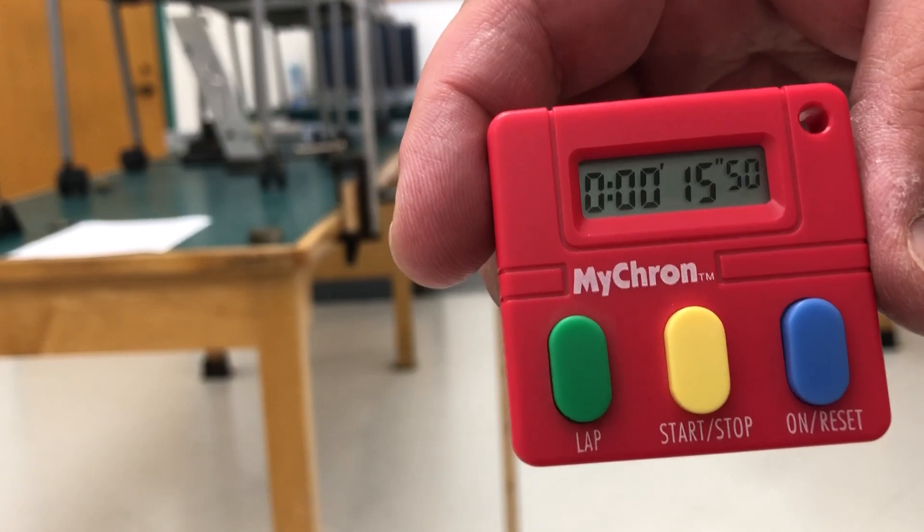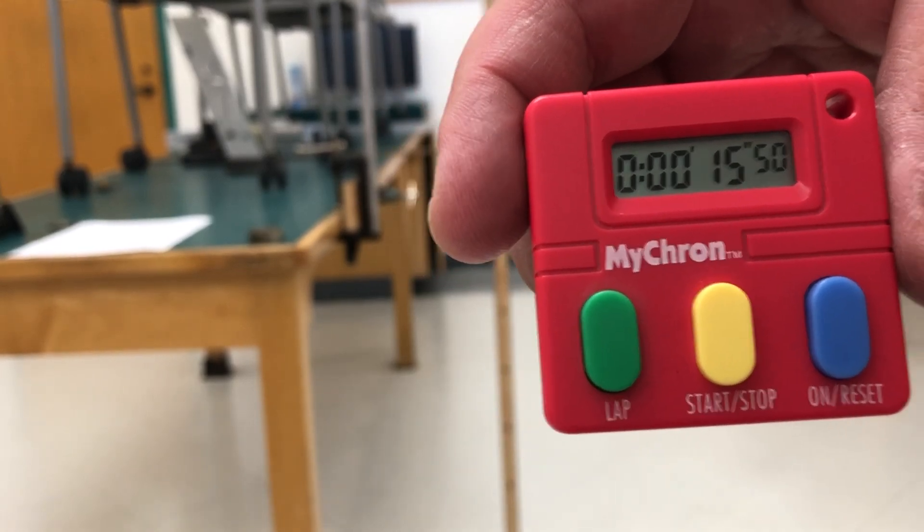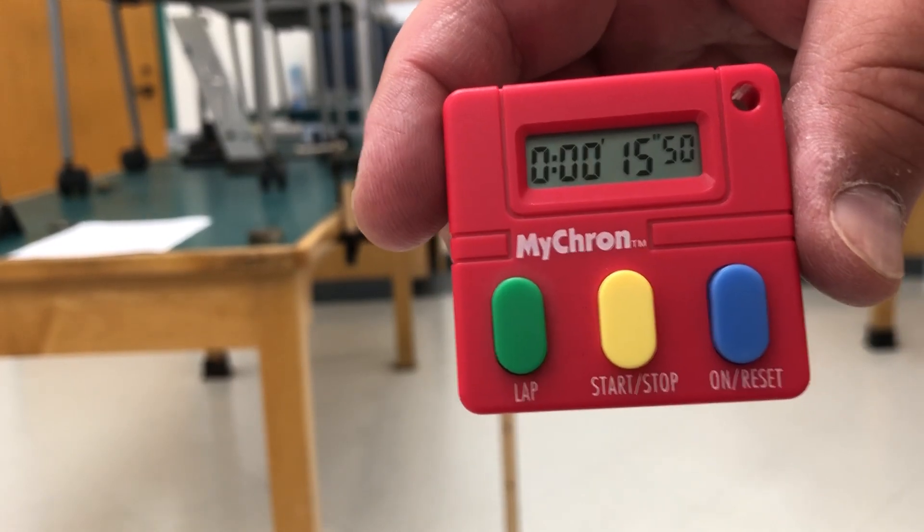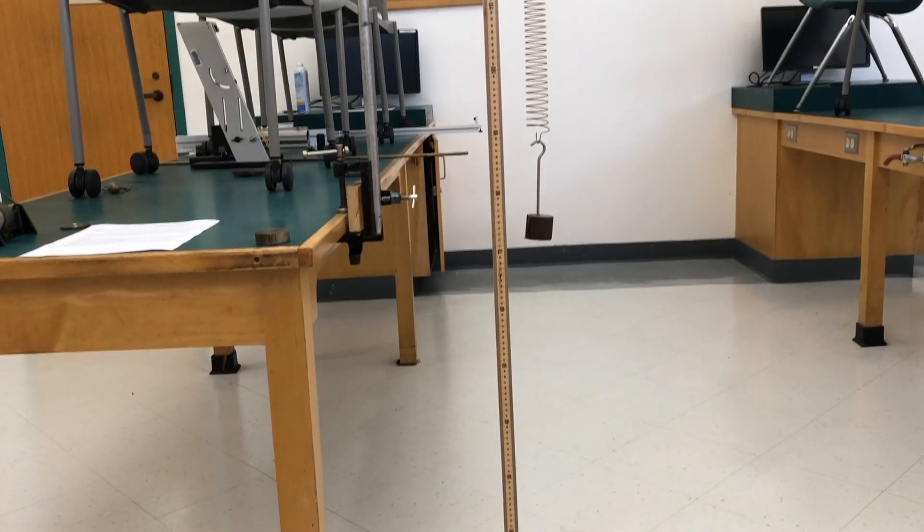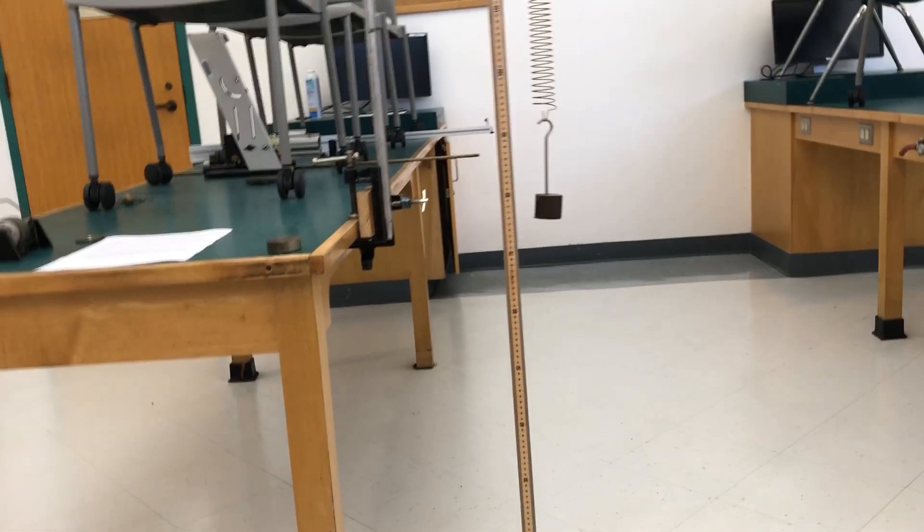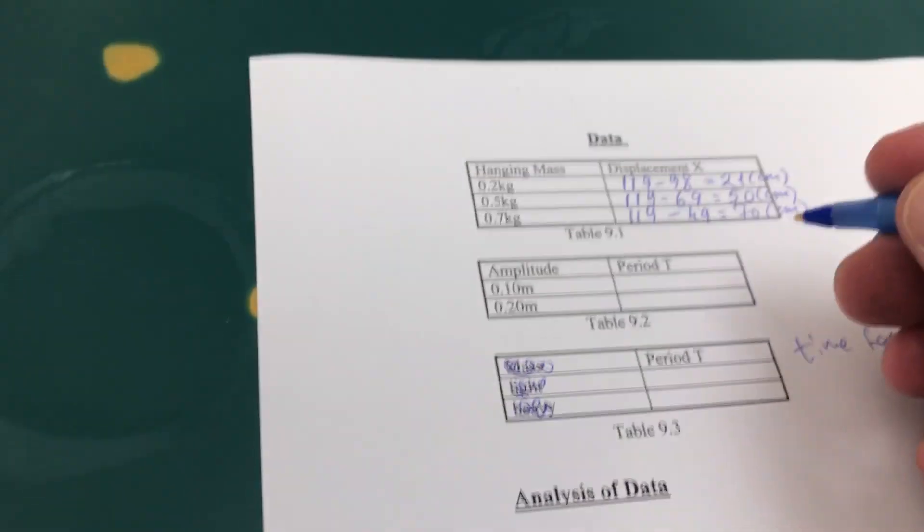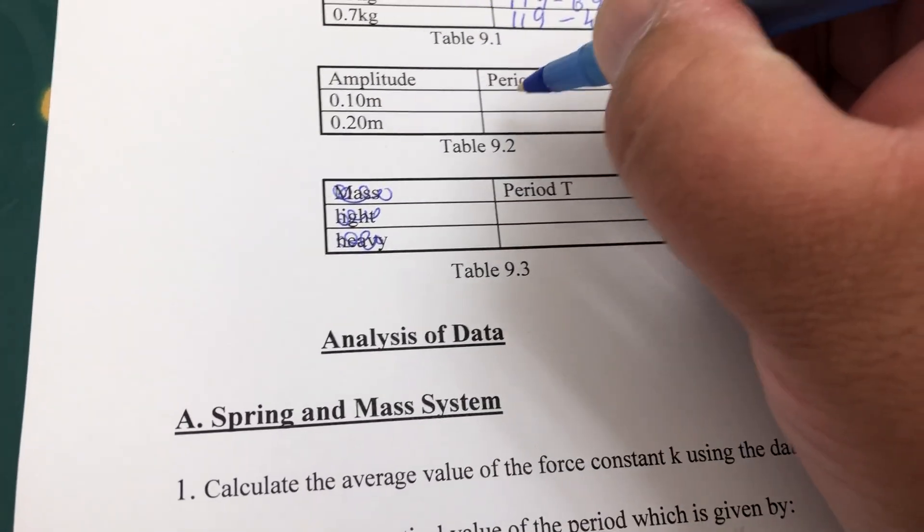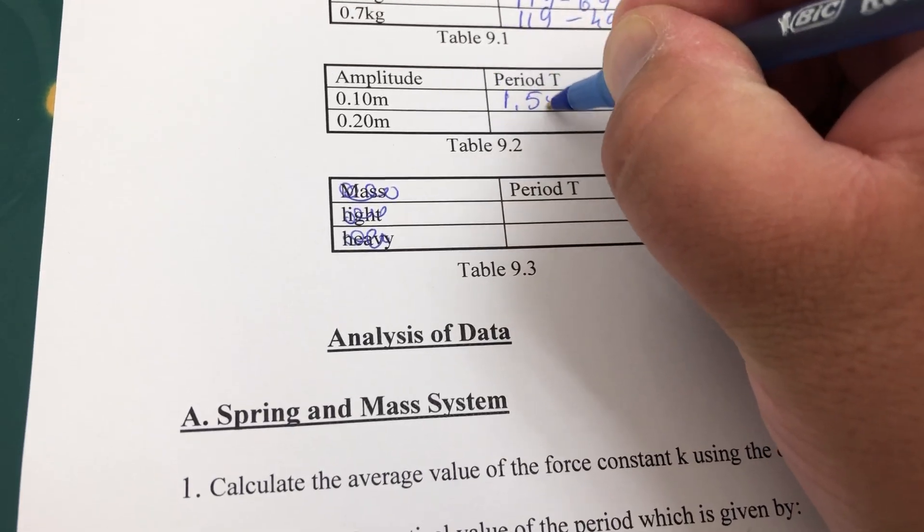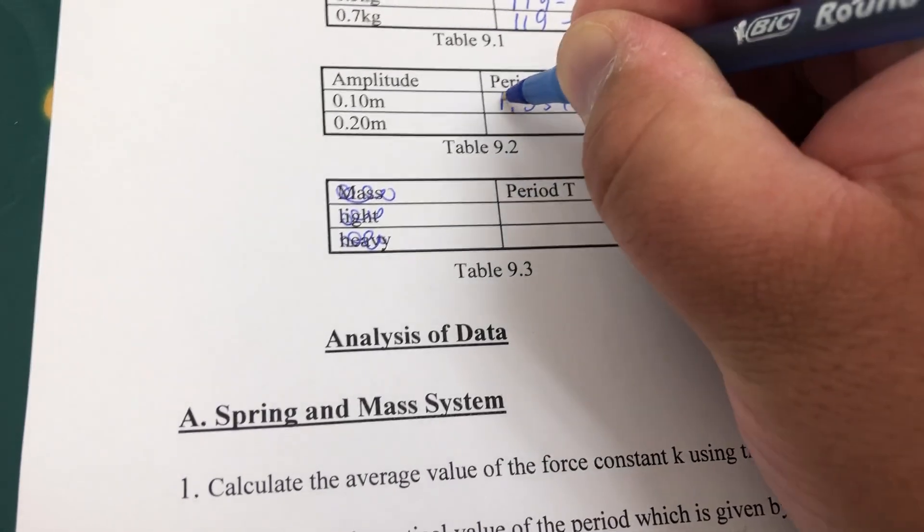Divide that by 10 oscillations and the period comes out as 1.55 seconds. So for the amplitude of 0.1 meter, the period is 1.55 seconds.